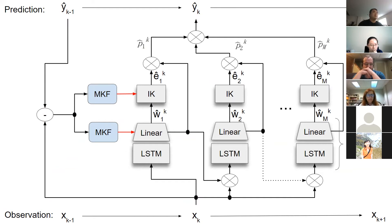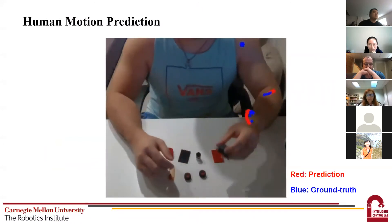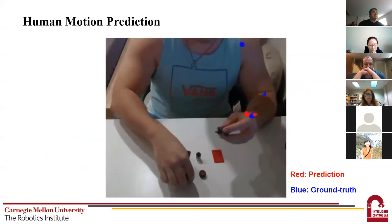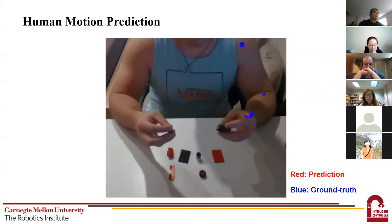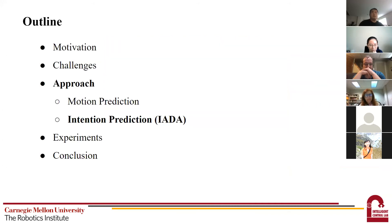This is a complete view of the motion prediction pipeline. There is also a short demo showing our motion prediction, and we will discuss the results later in the experiment section. That concludes the theories in the motion prediction, and for the next section we move on to the IADA training framework for learning a robust intention prediction model offline.